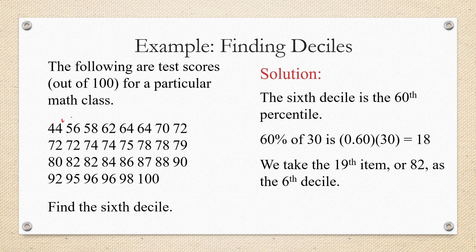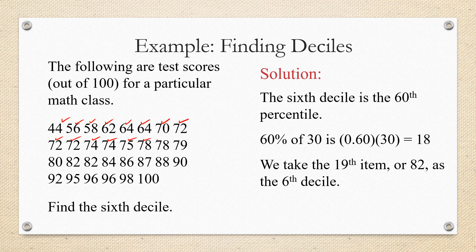So let's count. 1, 2, 3, 4, 5, 6, 7, 8, 9, 10, 11, 12, 13, 14, 15, 16, 17, 18 of the data values are in the bottom 60 percent.